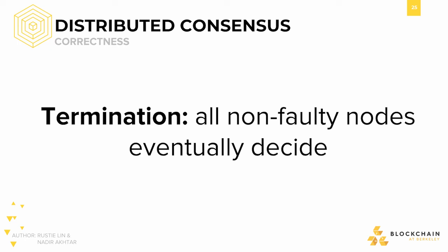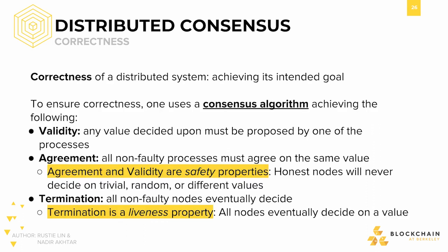The last requirement is termination. Termination means that all non-faulty nodes will eventually decide on some value — in other words, the system must eventually return some value and cannot forever hang in limbo. Both validity and agreement are safety properties, as they specify things that can never happen in a system coming to consensus. Termination, on the other hand, is a liveness property, as it specifies what must happen for a system to be considered correct. Without the guarantee of termination, we have no guarantee that consensus will ever be reached.